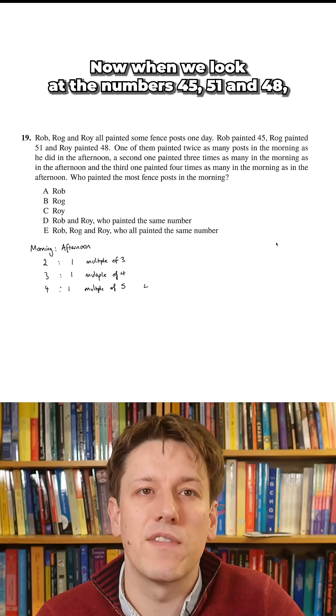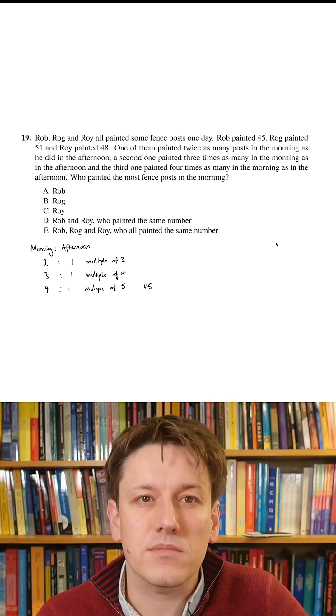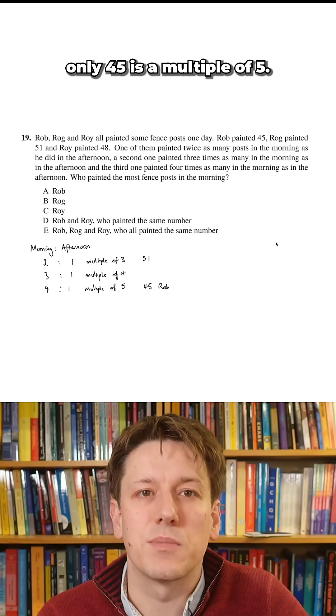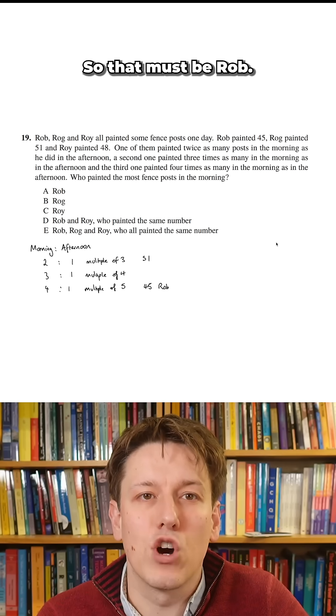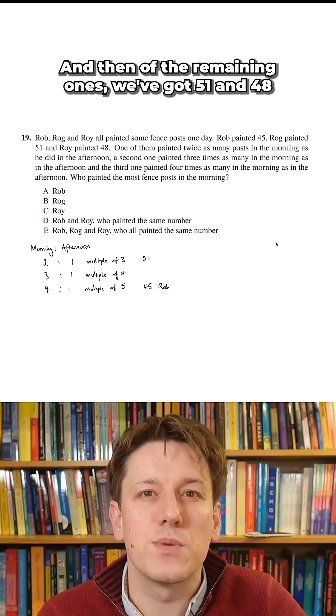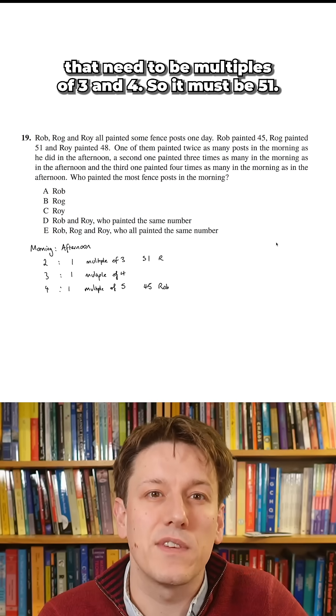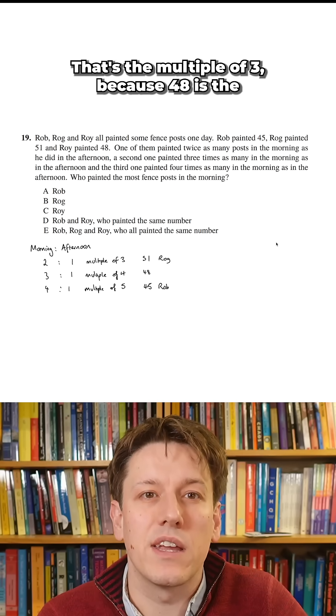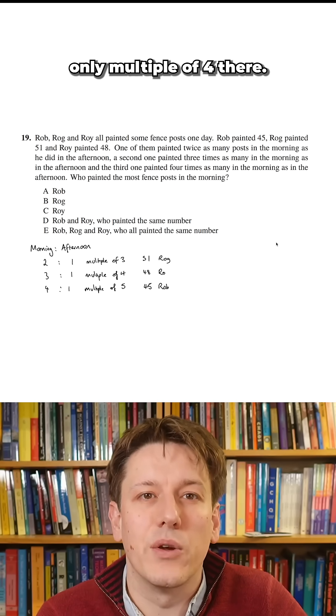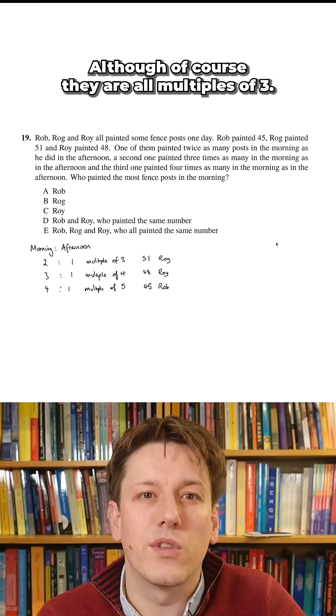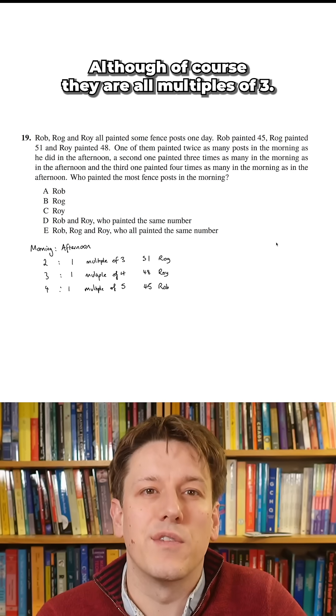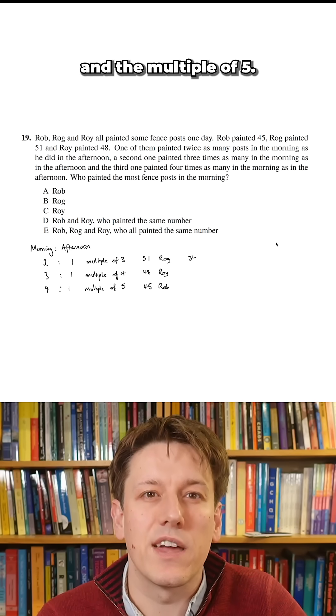Now when we look at the numbers 45, 51 and 48, only 45 is a multiple of five so that must be Rob. And then of the remaining ones we've got 51 and 48, there needs to be a multiple of three and four so it must be 51 that's the multiple of three because 48 is the only multiple of four there.